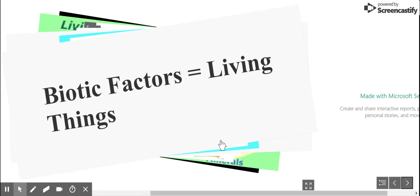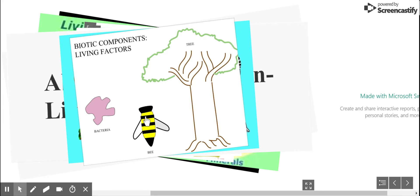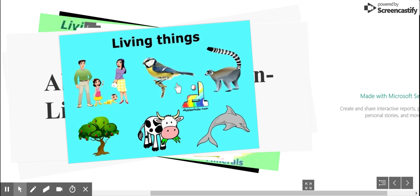Remember, biotic factors are living things, such as bacteria, a bumblebee, and a tree. Other living things can be a family, so human beings or people, a tree, a cow, a bird, a lemur, and a dolphin.